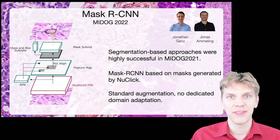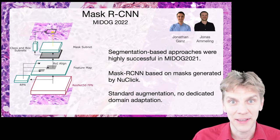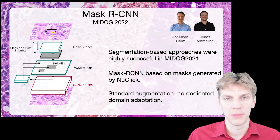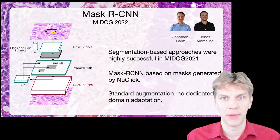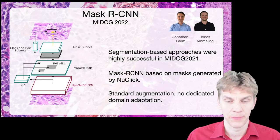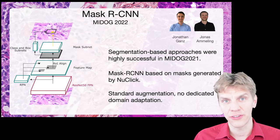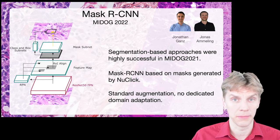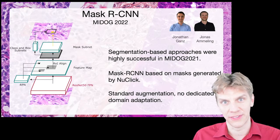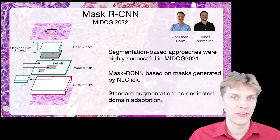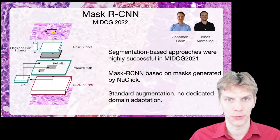The MASK RCNN approach, which was done by Jonathan Gantz and Jonas Ammeling, is basically a straightforward implementation of MASK RCNN using masks generated by the NuClick algorithm. In the last challenge it was shown that using pixel information did help to improve the performance, so we thought this might be a straightforward idea to transfer to this time. Besides that, no major domain adversarial or domain adaptation approaches besides normal augmentation were used.